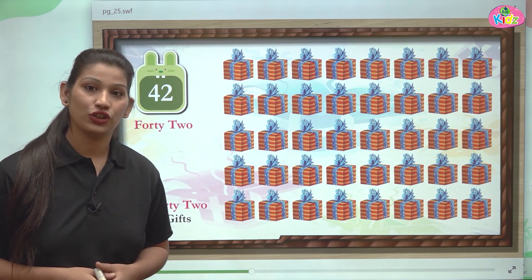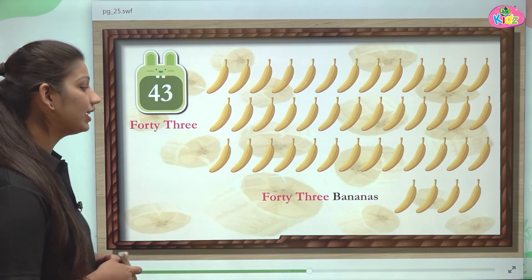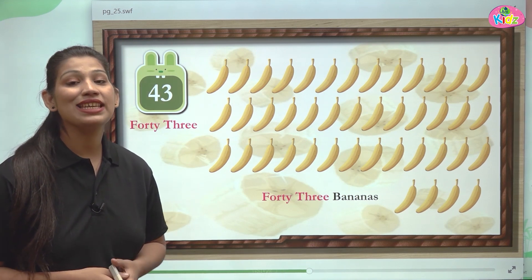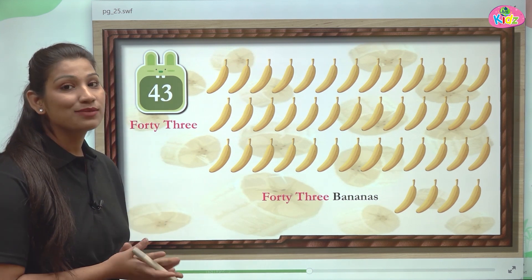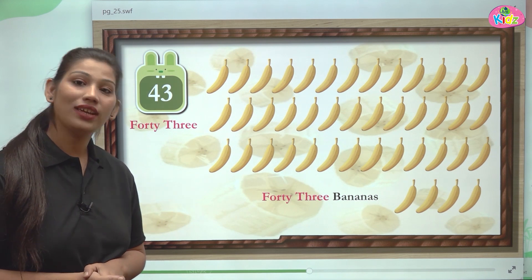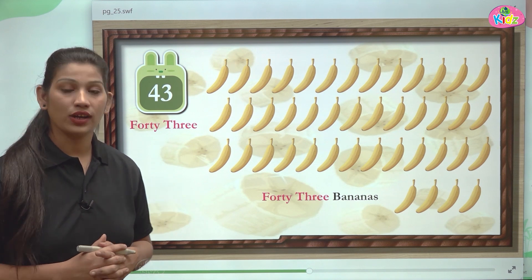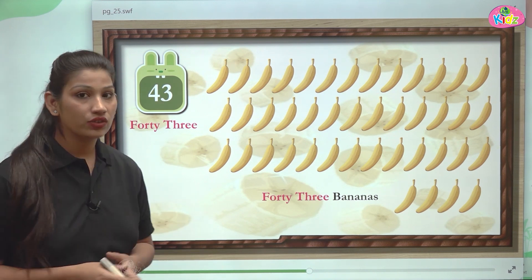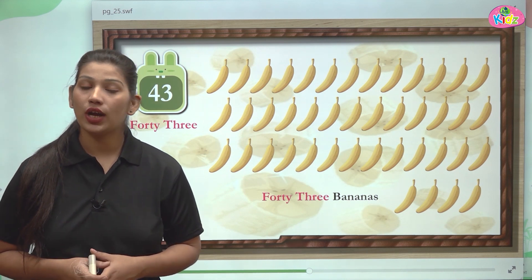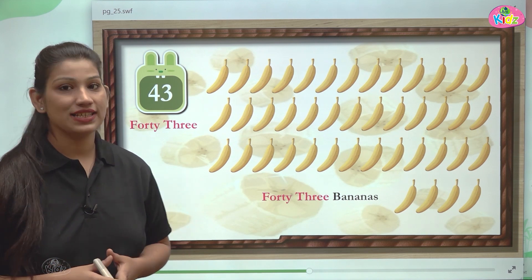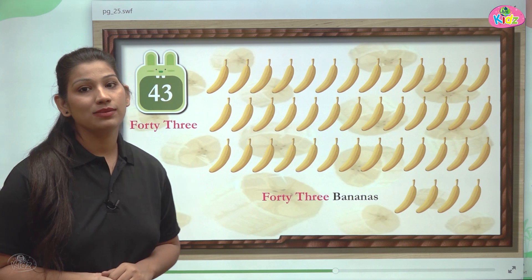Yeh hai number humara 42, aur humne dekhe 42 gifts. After 42 there comes number 43. Here you can see bananas — these bananas are 43 in number. 43 ko hum bolte hain 43 aur 43 ko hum likhte hain F-O-R-T-Y T-H-R-E-E. F-O-R-T-Y is 40 and T-H-R-E-E is 3. That's how it becomes 43.